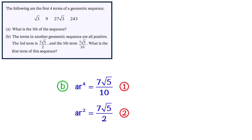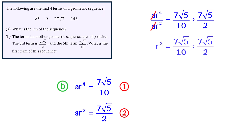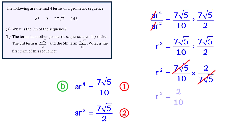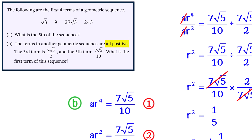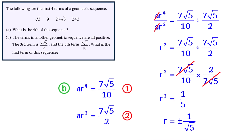Next, divide equation 1 by equation 2. So AR to the power of 4 divided by AR squared equals (7 root 5 over 10) divided by (7 root 5 over 2). The A's cancel on the left-hand side, giving R squared equals (7 root 5 over 10) divided by (7 root 5 over 2). Using KFC for dividing fractions, this becomes R squared equals (7 root 5 over 10) multiplied by (2 over 7 root 5). Cancelling the 7 root 5s gives R squared equals 2 tenths, which simplifies to one fifth. So R equals plus or minus 1 over root 5. Because the question states that all terms are positive, the common ratio must be 1 over root 5.